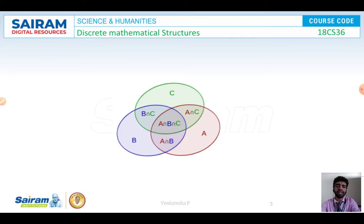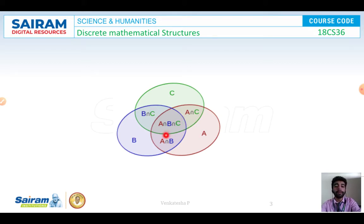Now we will see how to find the common element — that is the intersection. To define this, I will be taking three sets A, B, C. The common area between B and C will be called B intersection C. The common area between A and C will be called A intersection C. The common area between A and B will be called A intersection B. And finally, the common area between all three sets A, B, C will be called A intersection B intersection C.